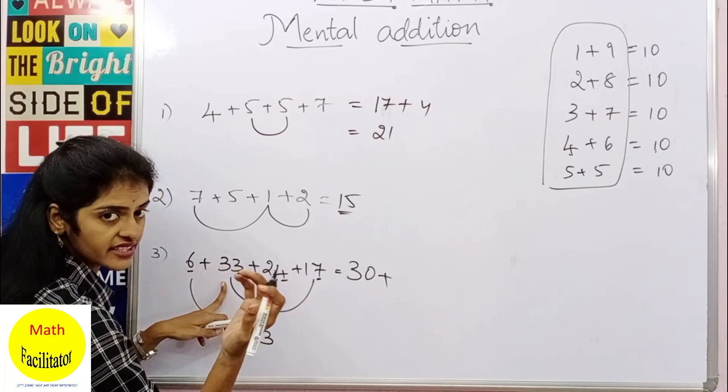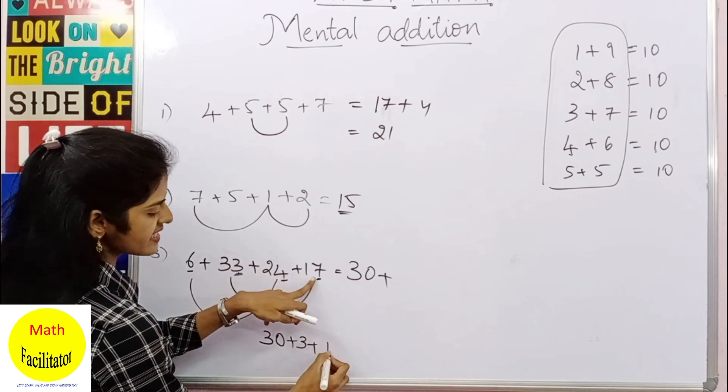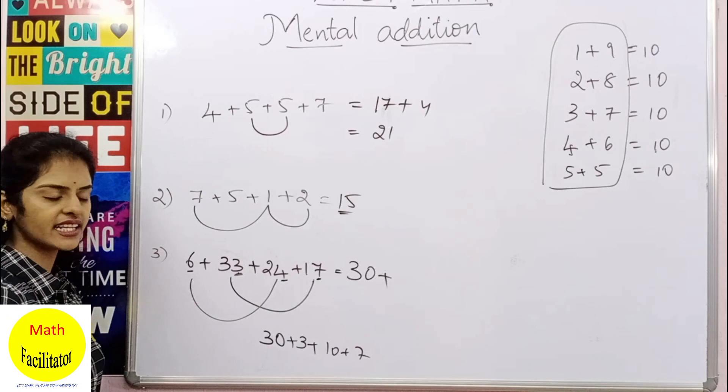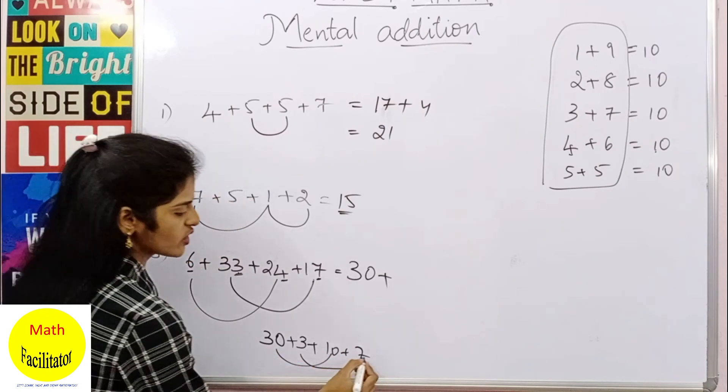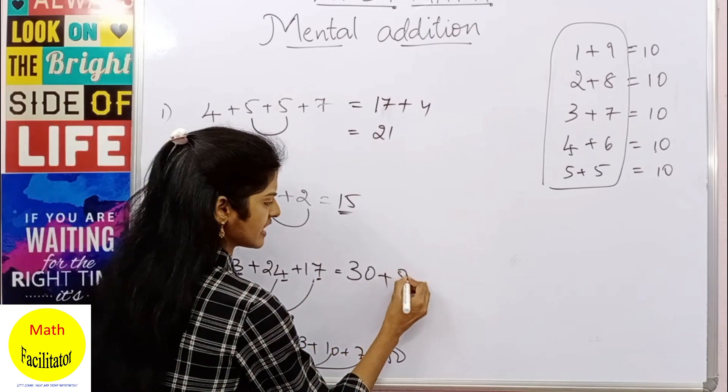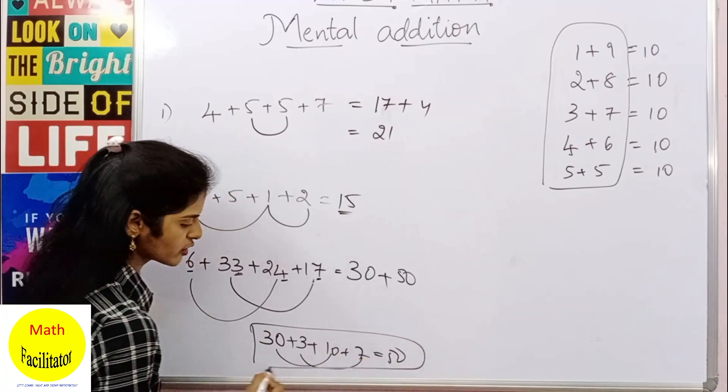33 plus 17, in the previous method we have solved: 33 is nothing but 30 plus 3, and 17 is nothing but 10 plus 7. So it is 40 plus 7 plus 3 is 10, so it is 50. So 33 plus 17 is 50. If you are familiar with this mental addition, you don't have to do this step also. Now 30 plus 50 is 80.